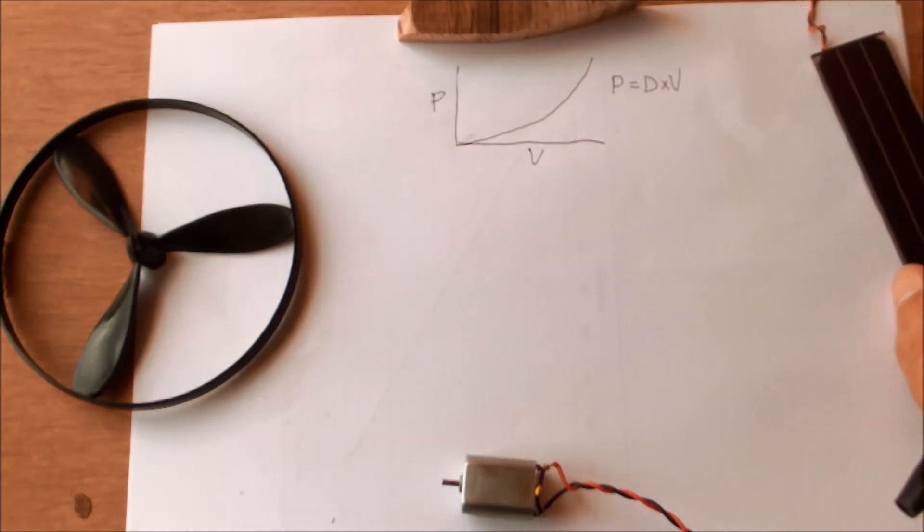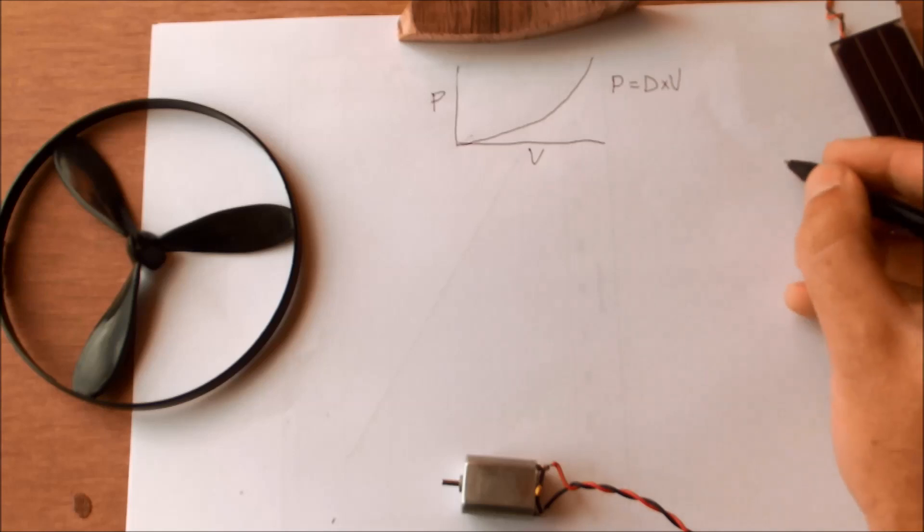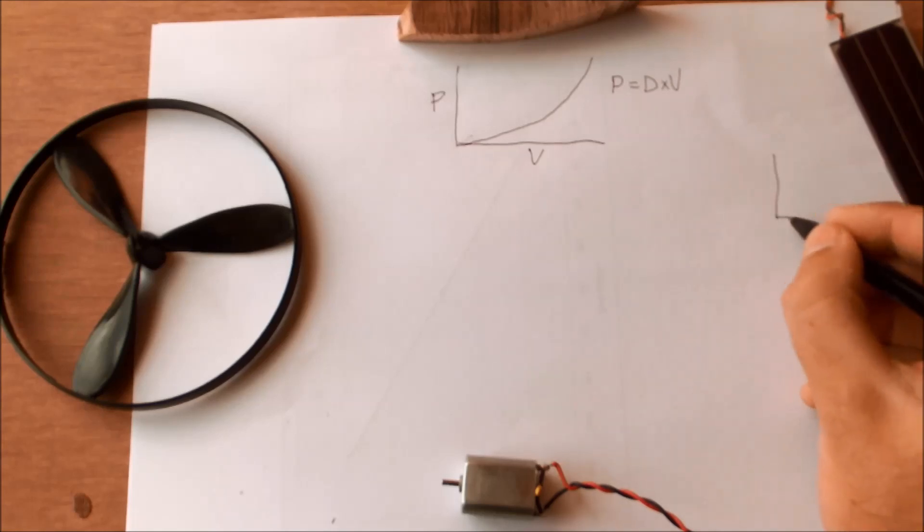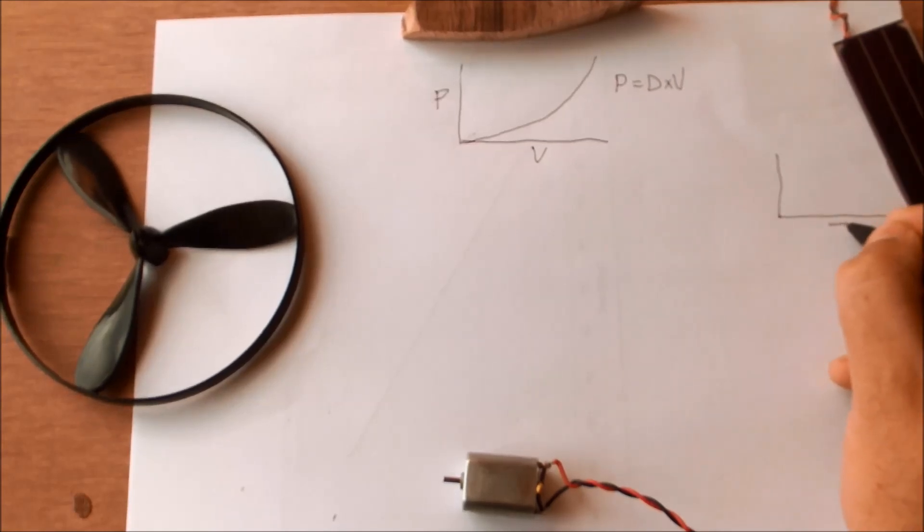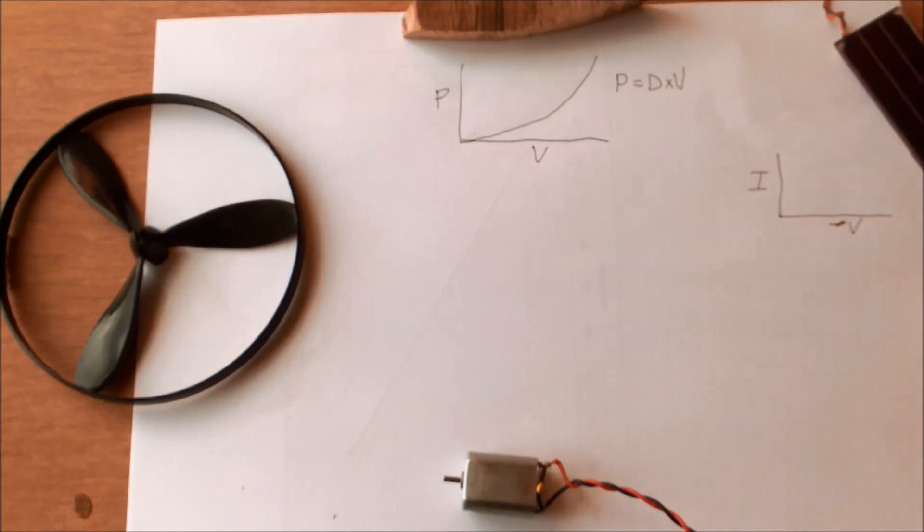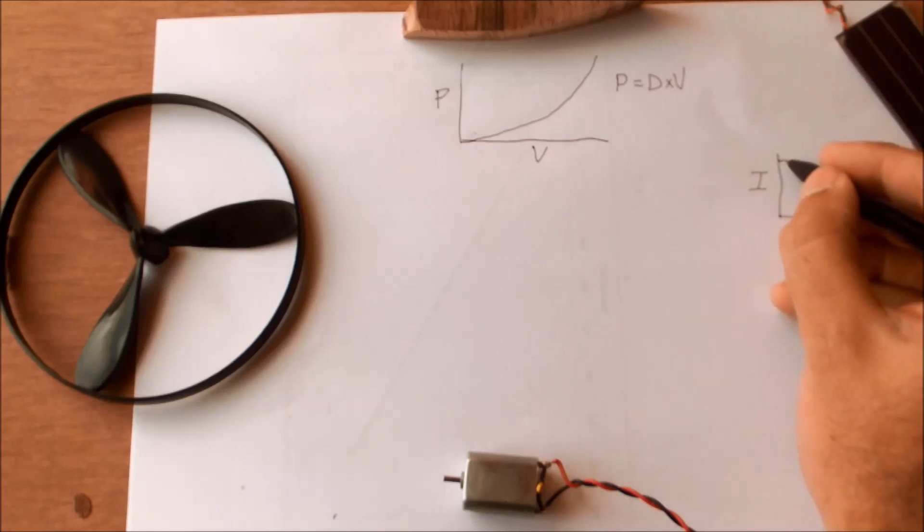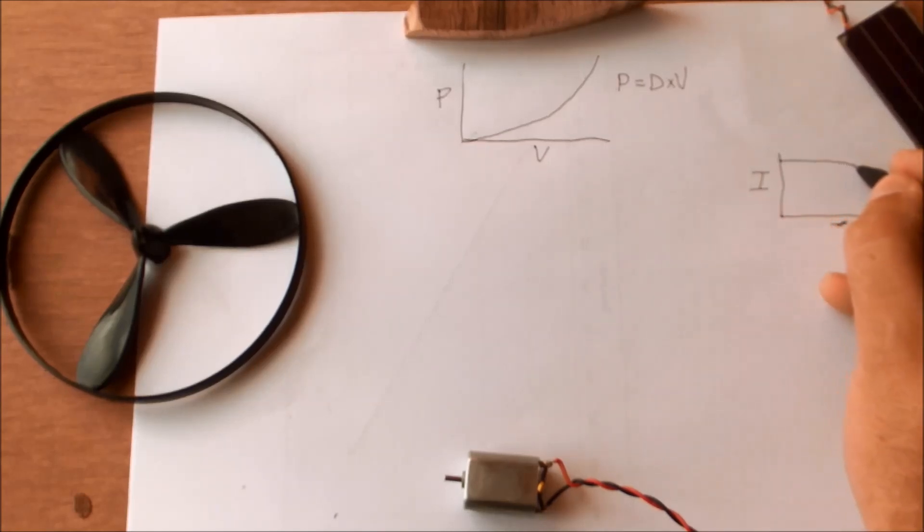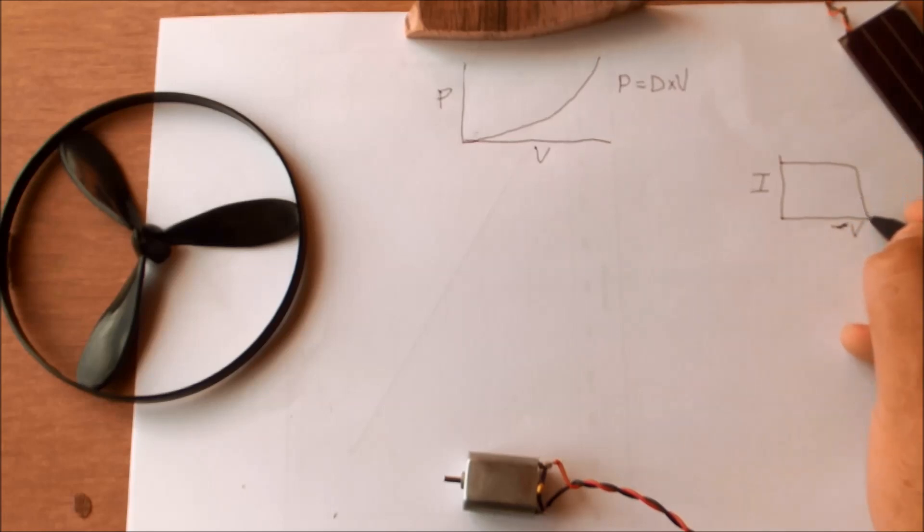The solar panel has a graph that characterizes voltage and current. Sometimes they supply this graph with the panel other times they simply tell you what the open circuit voltage is.